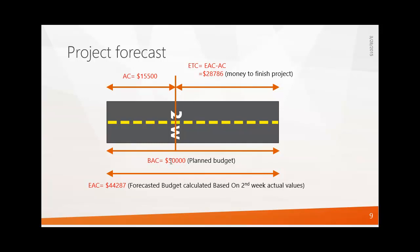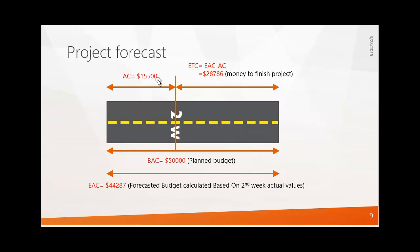Based on the week two actual values, the new estimated final cost comes to forty-four thousand two hundred and eighty-seven dollars — we call this the Estimate at Completion (EAC). Out of this EAC, fifteen thousand five hundred has already been spent as AC. Subtracting AC from EAC gives twenty-eight thousand seven hundred and eighty-six dollars — that is the Estimate to Complete (ETC), meaning how much more money is needed to finish the project.